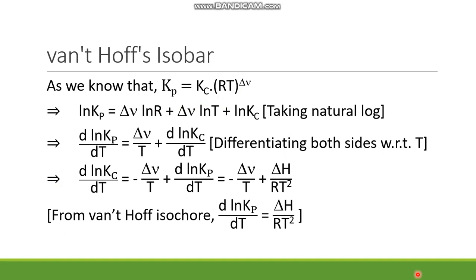We know the physical significance of all these terms. Kp is the equilibrium constant in terms of pressure. Kc is equilibrium constant in terms of concentration, R is universal gas constant, T is the temperature, and delta nu is the stoichiometric difference.